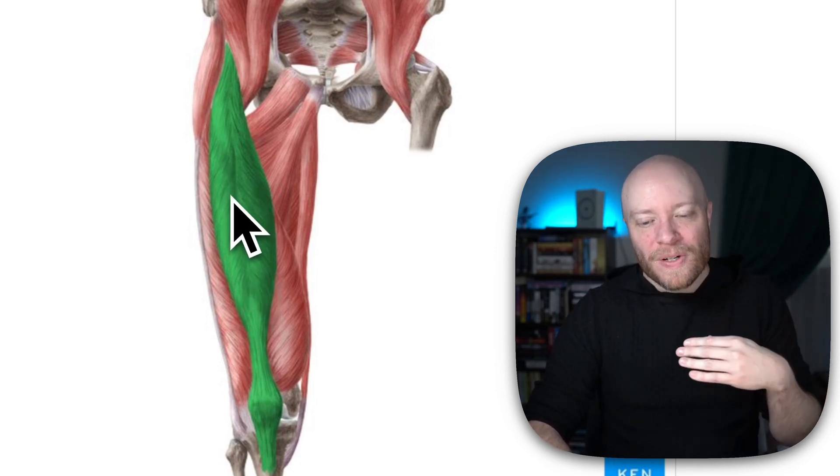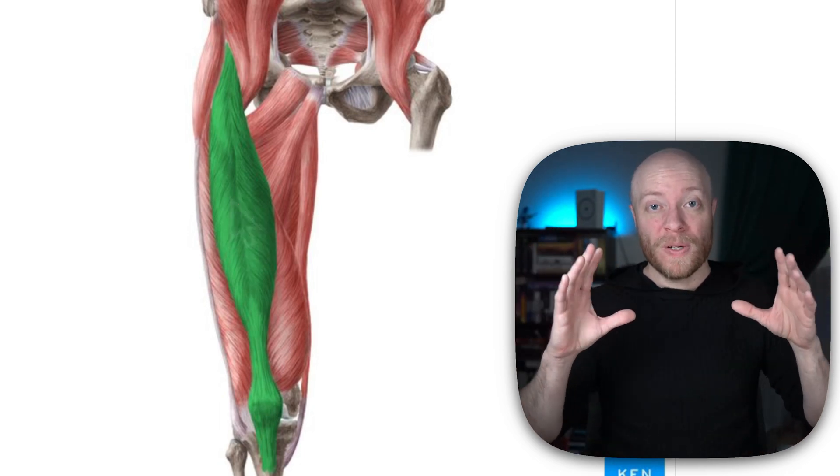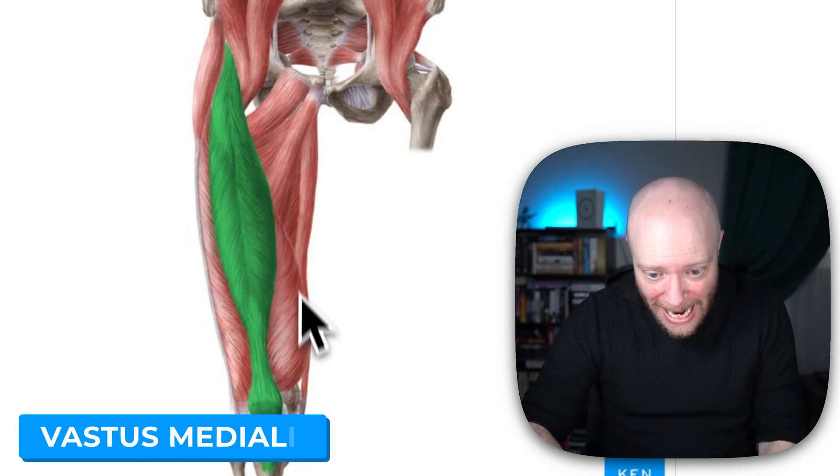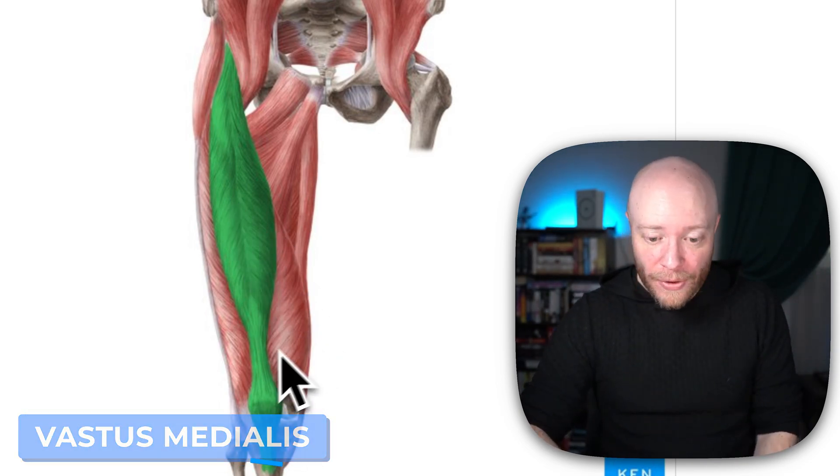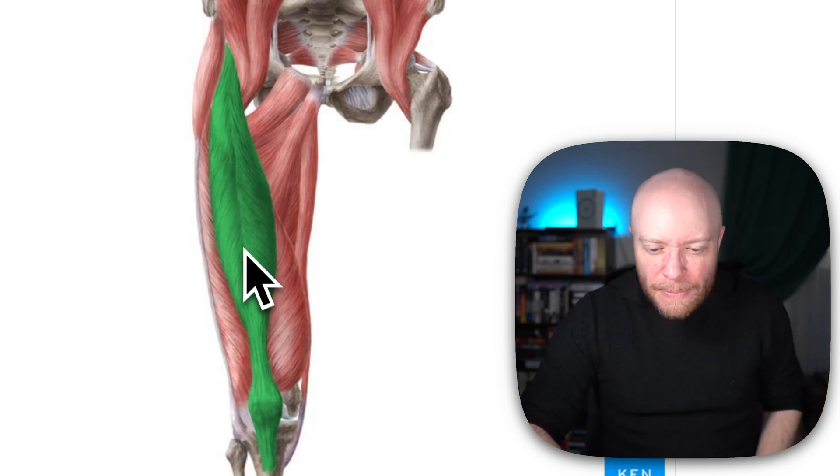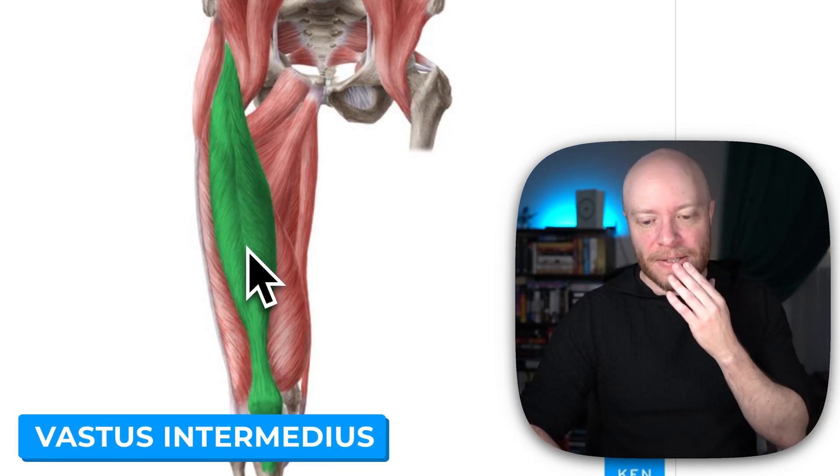And what I mean is the rectus femoris is one head to the quadriceps femoris, which is a four-headed and gigantic muscle. We can see the vastus medialis here is one other head. Then the vastus lateralis over here is another head. And then deep to rectus femoris is the fourth head called the vastus intermedius.